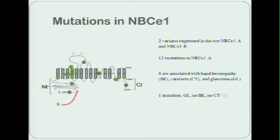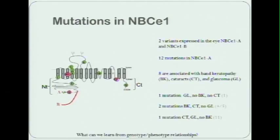Of these 12 mutations, eight are associated with all three of these eye defects. Yet this mutation here is associated specifically with glaucoma. There are two mutations that cluster in the third transmembrane helix that are associated with everything except glaucoma. And there's a fourth mutation out towards the C-terminus of the protein that's associated with everything except band keratopathy.